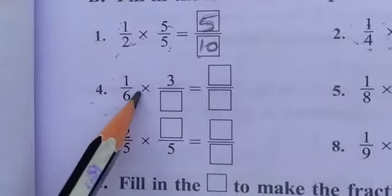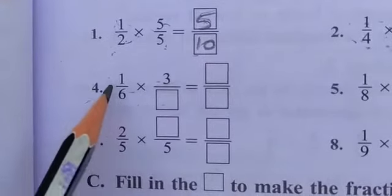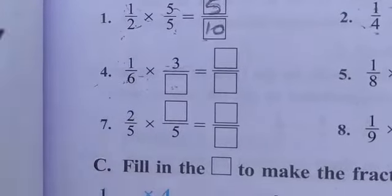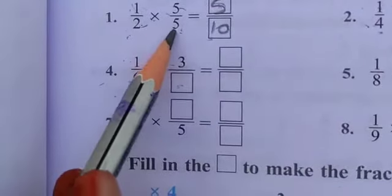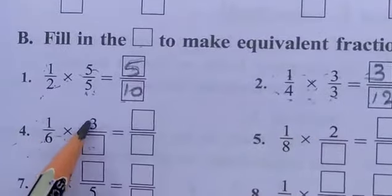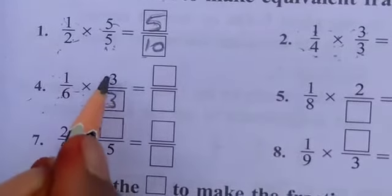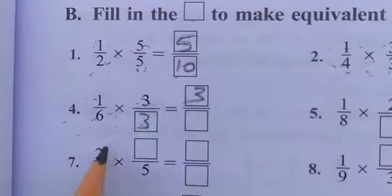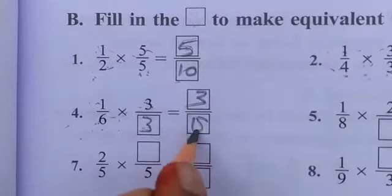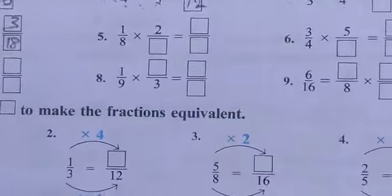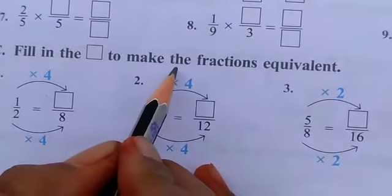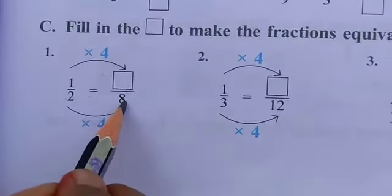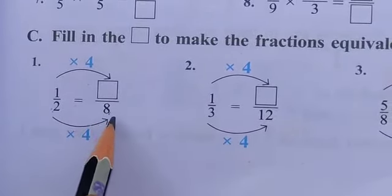One by two is equal to how many by — looking at the denominator, two goes how many times into eight? Two, four, eight — so the multiplier is four, and one by two is equal to four by eight.